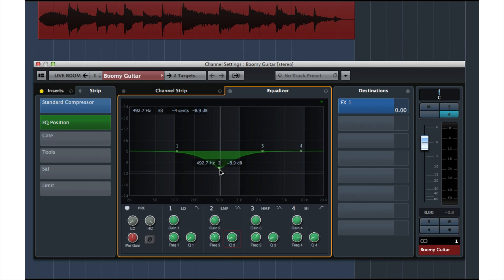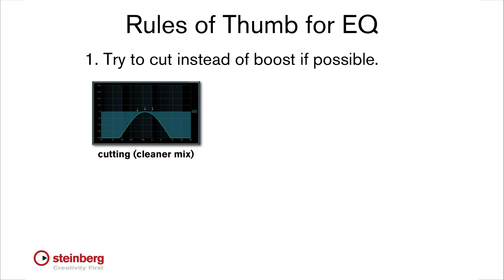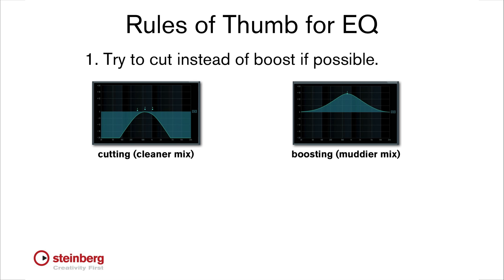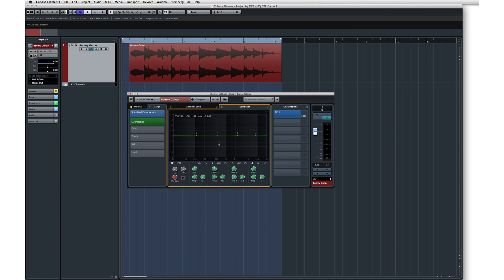Here are two rules of thumb for using EQ. If possible, try to get the sound you want by cutting rather than boosting — this will leave you with a cleaner mix when you're finished. Second, try to avoid using more than about 6 dB of gain unless you're trying for an extreme effect. If you have to use a lot of EQ to fix the tone, you can probably get a better sound by using a different microphone or different microphone placement. Many acoustic guitars have a little extra bass around 150 to 200 Hz, so let's start in that area to fix this problem.